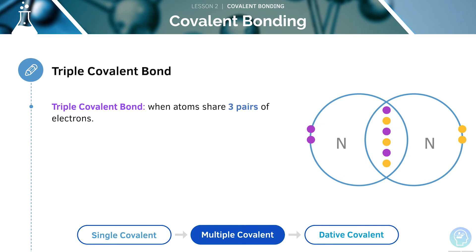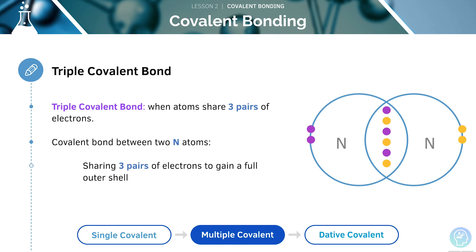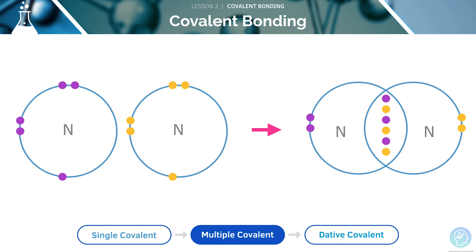A triple covalent bond is when the atom shares three pairs of electrons. For example, the covalent bond between the two nitrogen atoms involves sharing three pairs of electrons to gain a full outer shell. Both the nitrogen atoms need three electrons to gain a full outer shell. Covalent bonding has enabled them to share these electrons to gain a full outer shell.